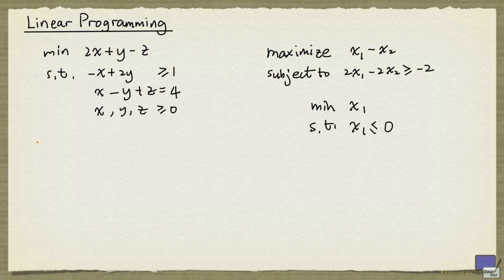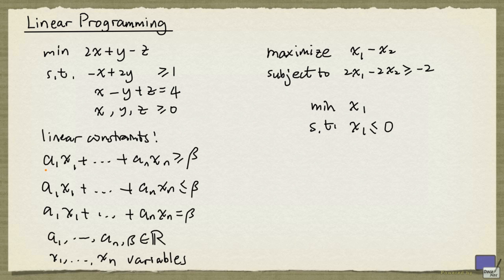The constraints of a linear programming problem must be of one of the following forms. So the left-hand side is of the form a1 times the variable x1 plus and so on up to an times the variable xn greater than or equal to some real number beta or less than or equal to some real number beta or is equal to some real number beta.